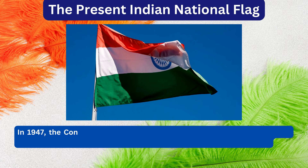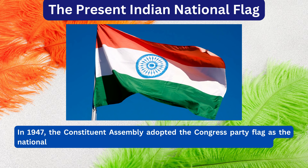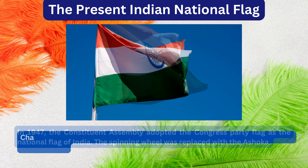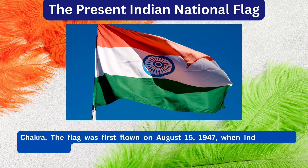In 1947, the Constituent Assembly adopted the Congress Party flag as the national flag of India. The spinning wheel was replaced with the Ashok Chakra. The flag was first flown on August 15, 1947, when India became independent.